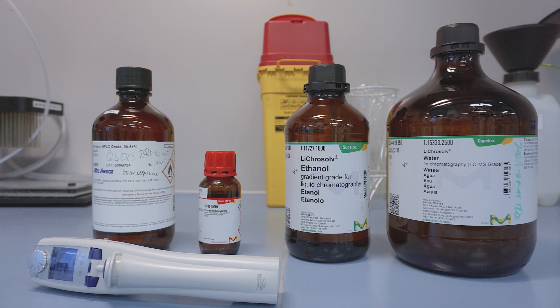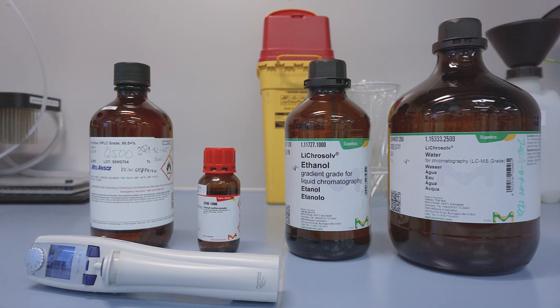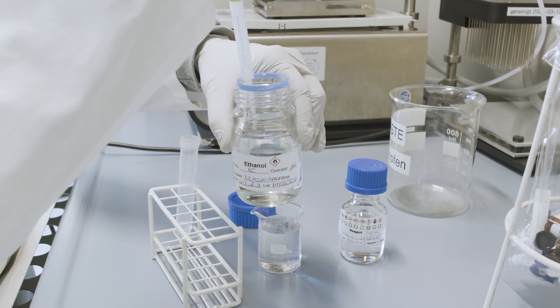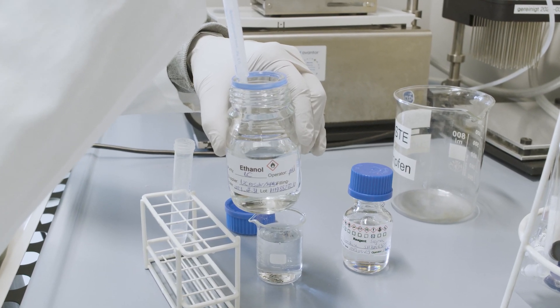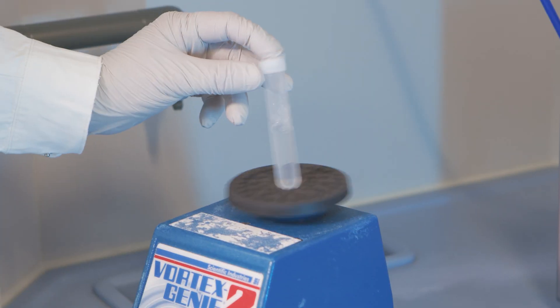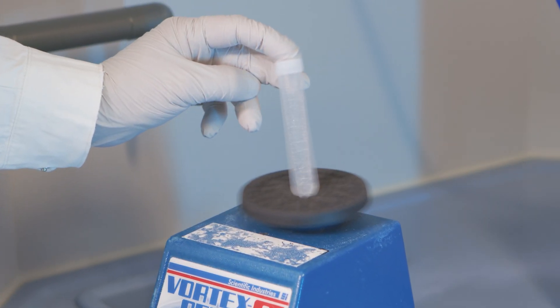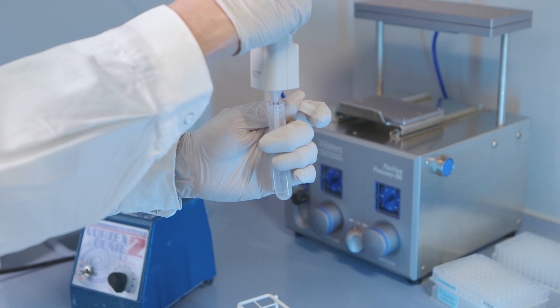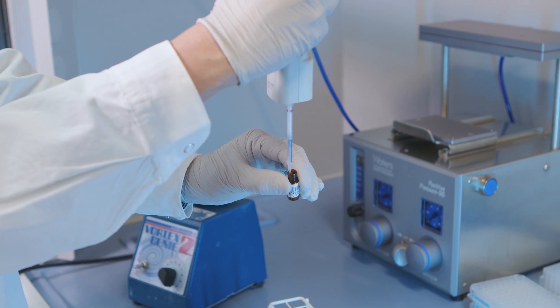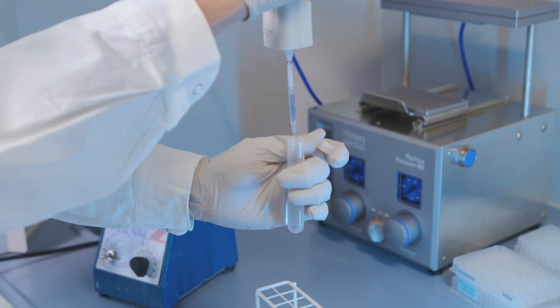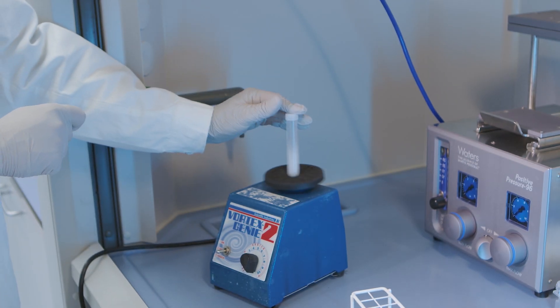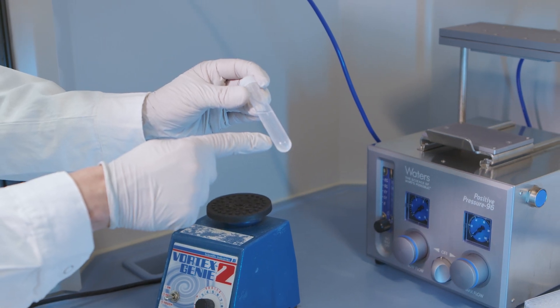In a laboratory fume hood, prepare the premix for derivatization using the provided plastic tube. Add 1900 microliters of ethanol, water, and pyridine. Close the tube and vortex briefly to mix. To create the derivatization solution, shortly before the completion of the first drying step, add 300 microliters of phenyl isothiocyanate to the derivatization premix and vortex rigorously for at least 10 seconds until the solution becomes clear.